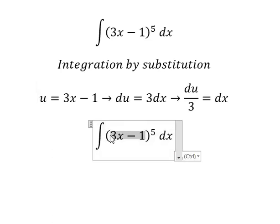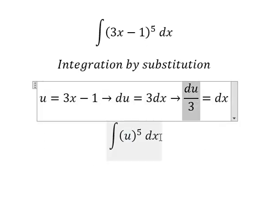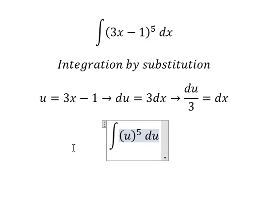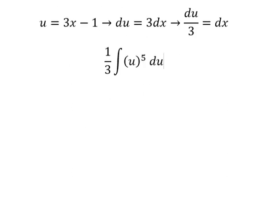Now we substitute: we change (3x-1)^5 to u^5, and dx becomes du/3. Next we have the integration formula here.